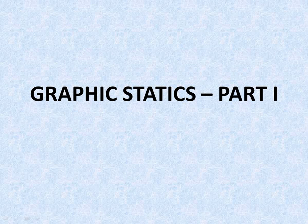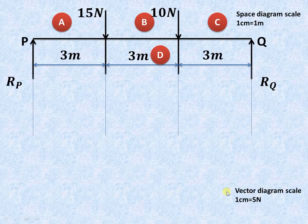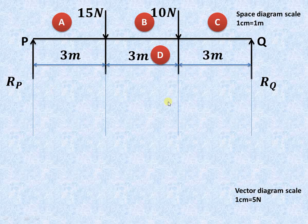Today we try to understand how to find out the beam reactions using the vector diagram or polar diagram and a funicular polygon. Suppose we are having a simply supported beam as shown over here. The beam is supported at two points P and Q, and therefore the reactions are RP and RQ at those particular points.